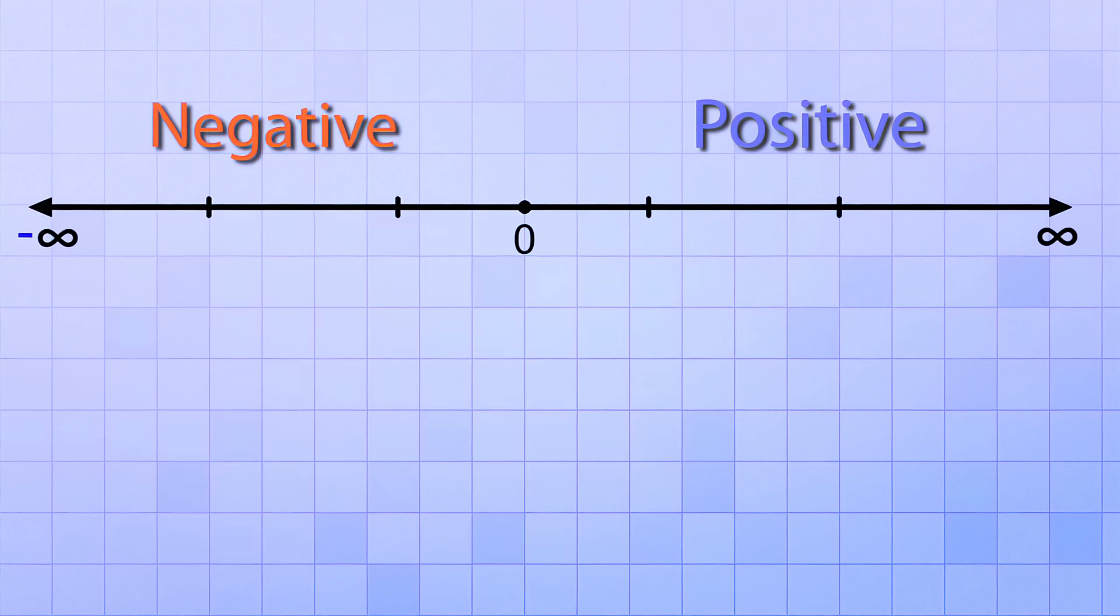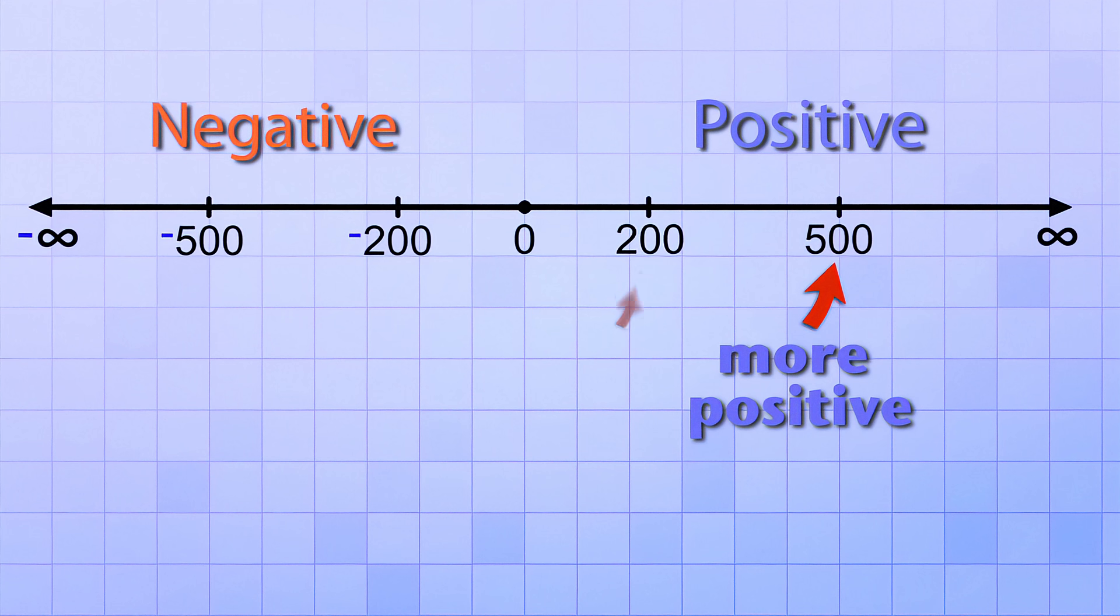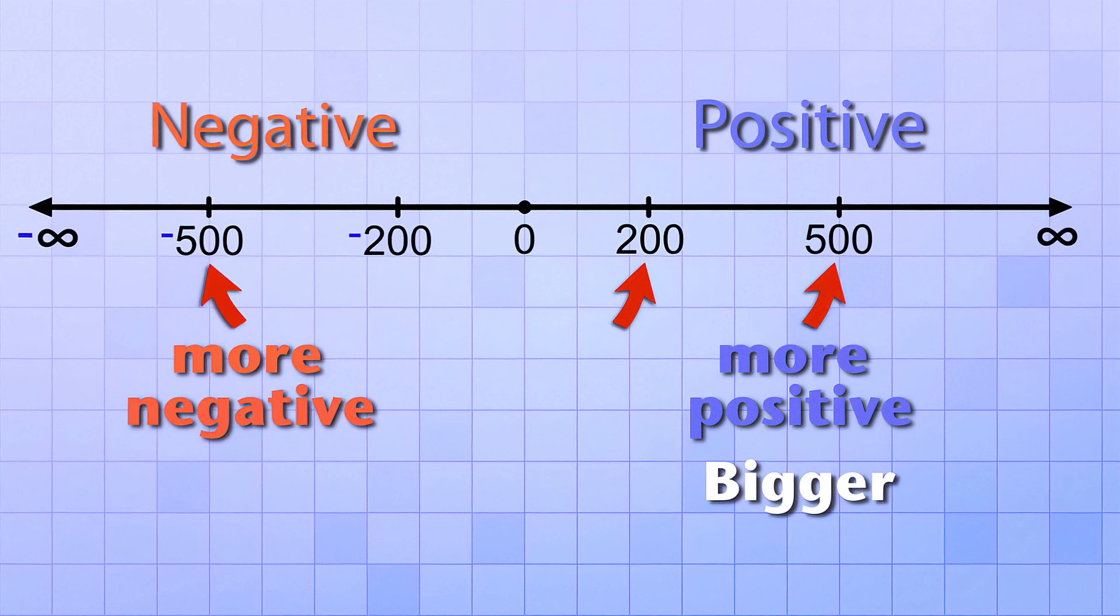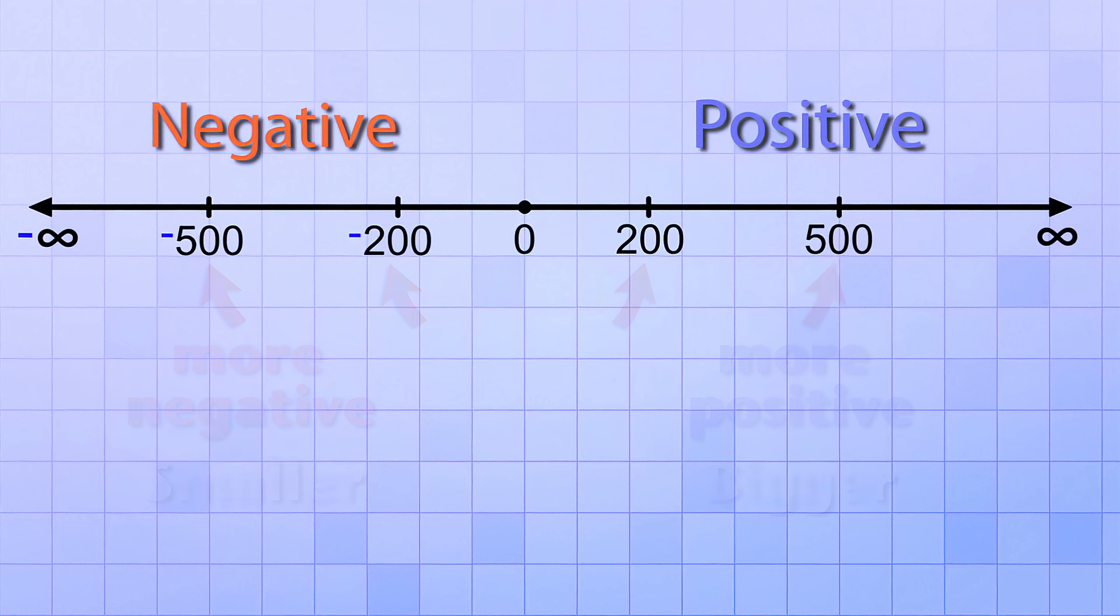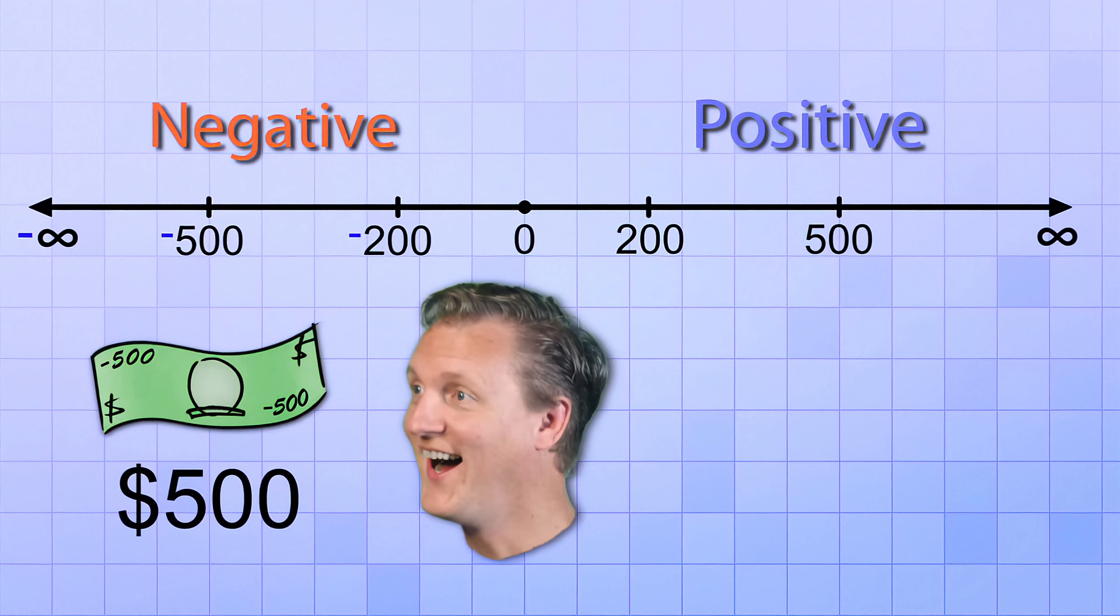And you can use that idea no matter what the numbers are. On the positive side, 500 is more positive than 200, so it's bigger. But on the negative side, negative 500 is more negative than negative 200, so it's smaller. Keep that in mind if anyone ever offers to give you negative $500. The 500 part sounds pretty good, but the negative part, not so much.